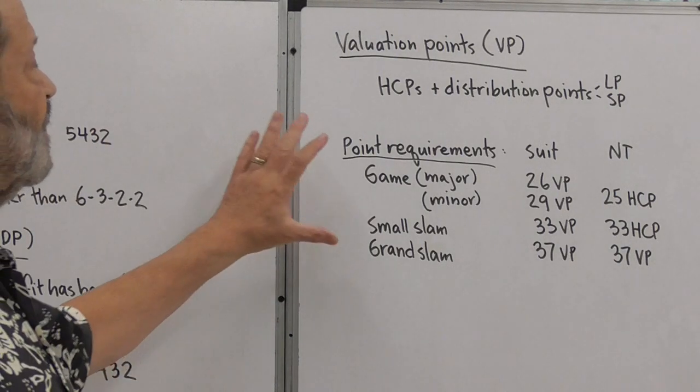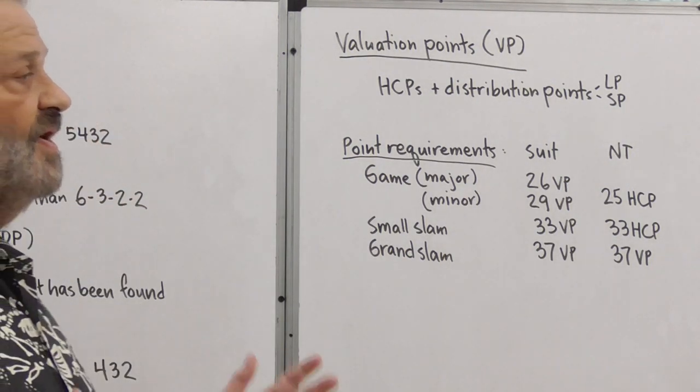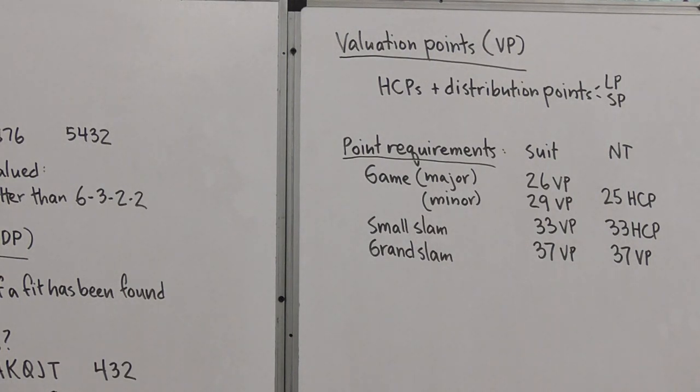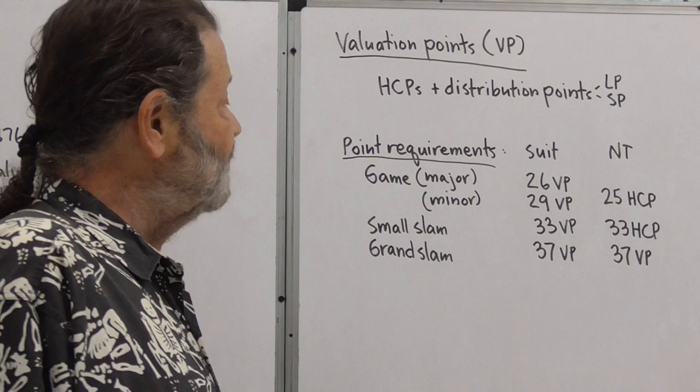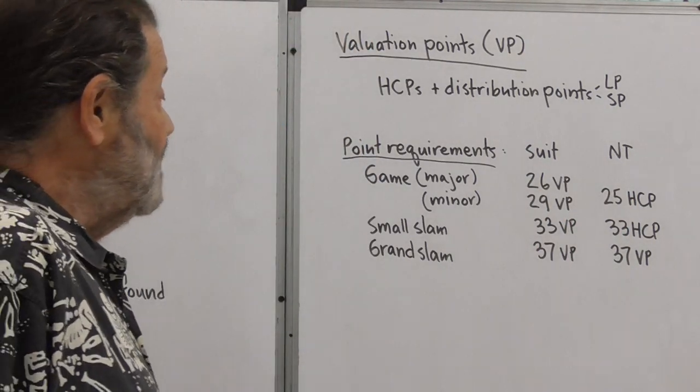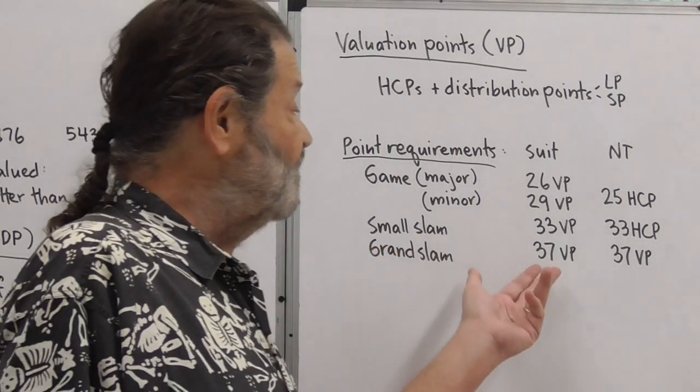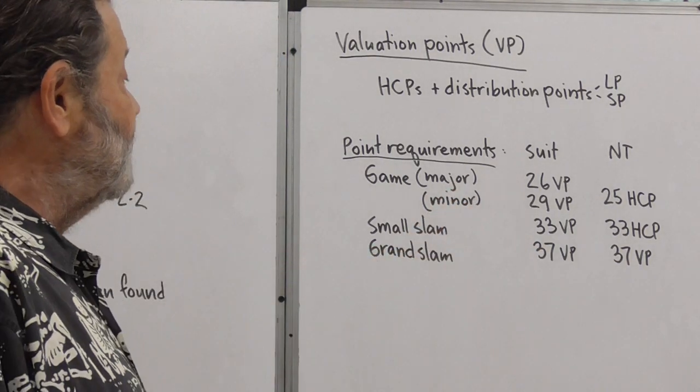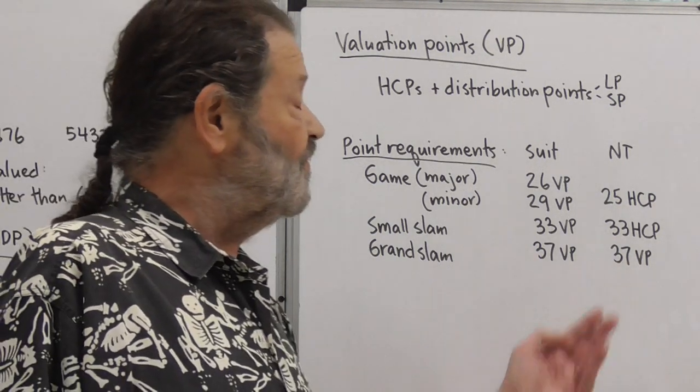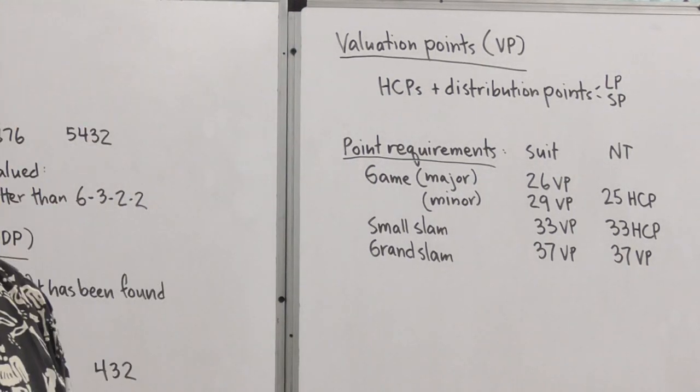And then the last thing we're going to talk about here is the point requirements for various levels of contracts. These mostly represent relatively balanced hands. When hands have a lot of shape, long suits and short suits, these numbers kind of go out the window a little bit. But for the typical hand, game in the major, we like to have 26 valuation points and 29 valuation points for game in a minor, whereas in no trump, about 25 is usually adequate. For a small slam, we want 33 valuation points if it's in a suit, 33 high card points if it's in no trump. And for grand slam, 37 and 37. These numbers probably derive from the idea that if you hold 33 high card points, you can't be missing two aces. So a small slam at least has a chance. And here with 37 high card points, we can't be missing even one ace. So that's it for today. Thank you.